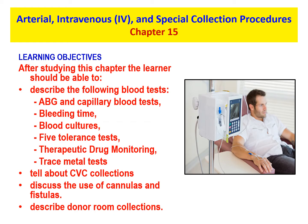These learning objectives are vitally important, so make sure you're reading through them to touch base on what you should know at the end. If you read chapter 15 in your textbook, watch the PowerPoint presentations here, have your black binder out, fill out your review guides, and then study those review guides, you will do really well. At the end of chapter 15, we'll be able to describe all blood tests listed, from ABGs down to trace metals, donor room collections, and everything in between. These learning objectives are also listed at the front of your textbook.